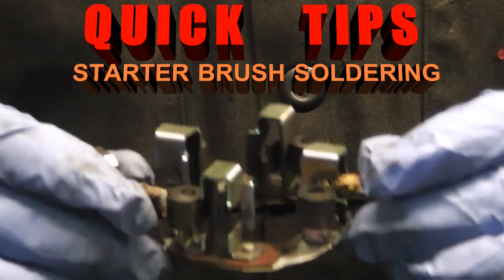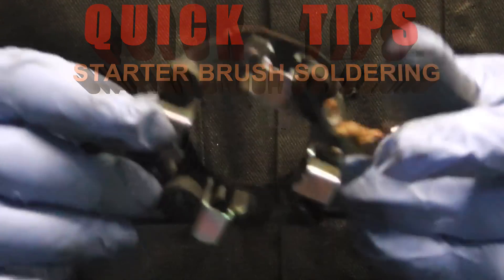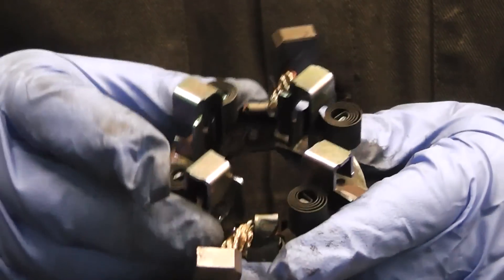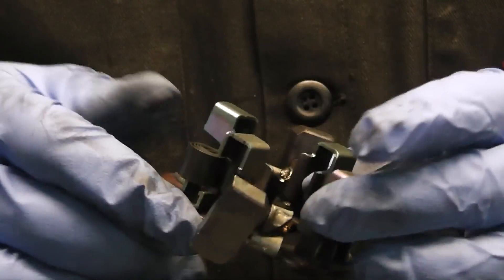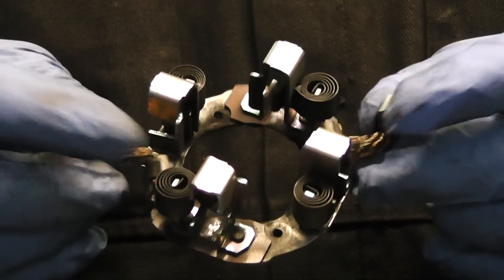Now most starter motors have four brushes, two negatives and two positives. Negatives are always situated at the brush box where it's getting ground from the top there. And that's our two negatives there, this one and this one. And two positives.